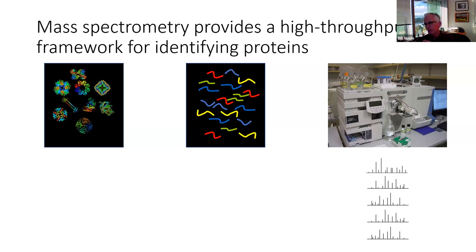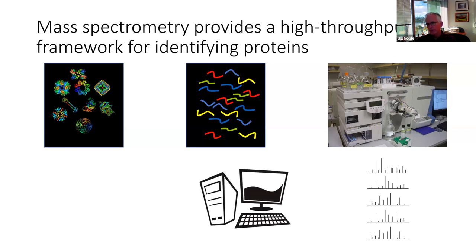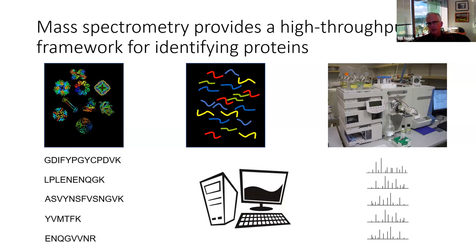Each spectrum ideally corresponds to a population of many copies of the same peptide sequence. The main computational task is to determine what peptide was responsible for generating a given spectrum. So you have some computer that says, 'That first spectrum was generated by GDIFYP, the second by LPLENEN,' and so on. That's essentially the problem at hand.